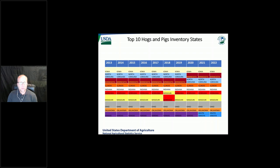For the top 10 states for hogs and pigs, this has been relatively stable. Iowa is number one. There was a change in 2022 where Minnesota took the number two spot over North Carolina. Nebraska and Missouri had a flip flop in 2018, and South Dakota came into the top 10 in 2021 whereas Kansas dropped out.